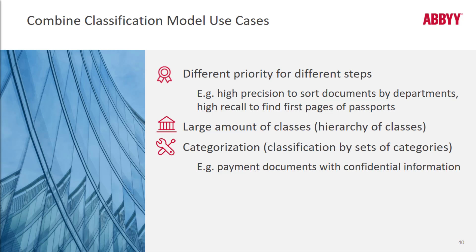When speaking about creating cascades — in other words, combining classification models — here are some cases when it can be valuable: when you want to apply different priority settings to different steps; when there are too many classes, so a cascade can speed up the classification process; and when you want to increase quality via categorization.